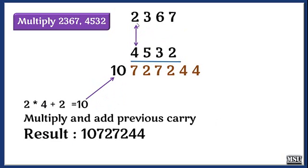At last step, I am going to multiply the left most bit. 2 into 4, the result is 10 because we are adding the carry also. The result we are going to get.